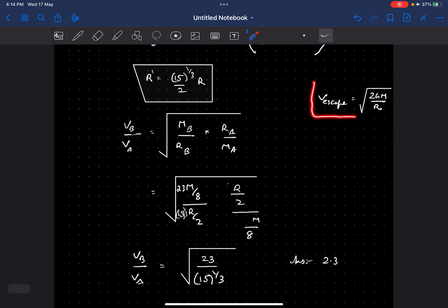You just need to know what is the formula for the escape velocity from the planet surface, and that would be square root 2gm by r, where m is the mass of the planet and r is the radius of the planet.